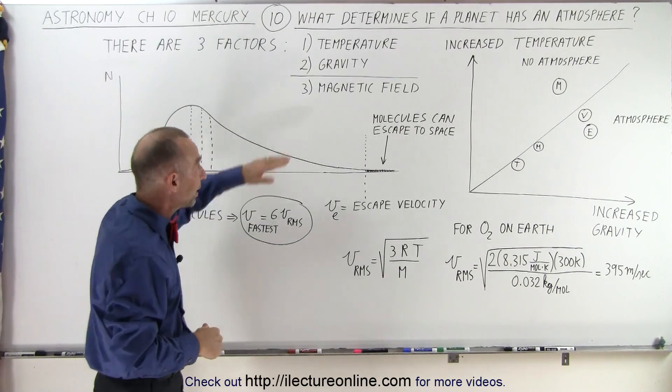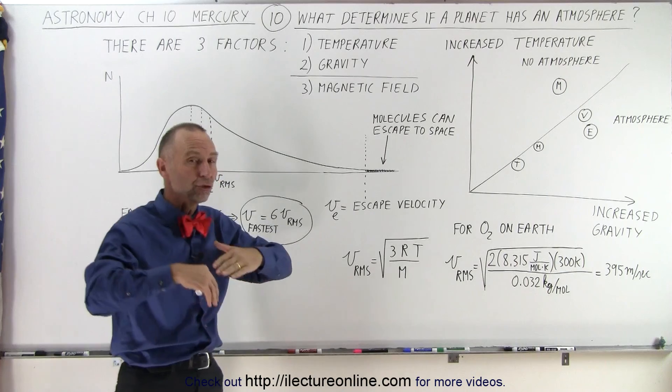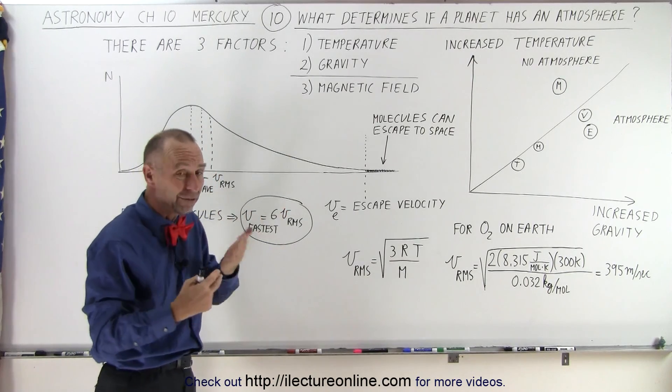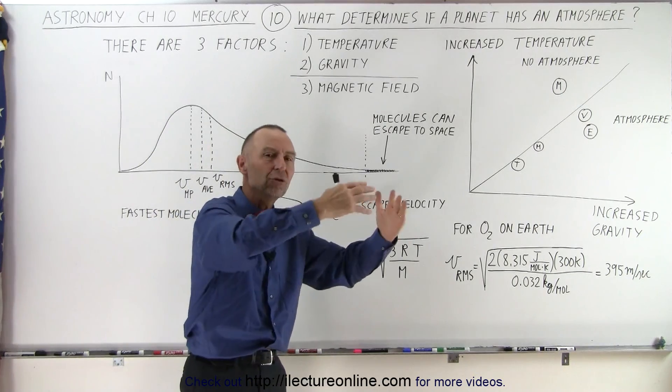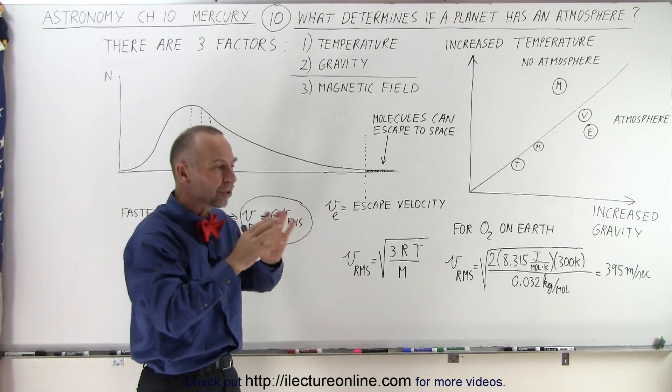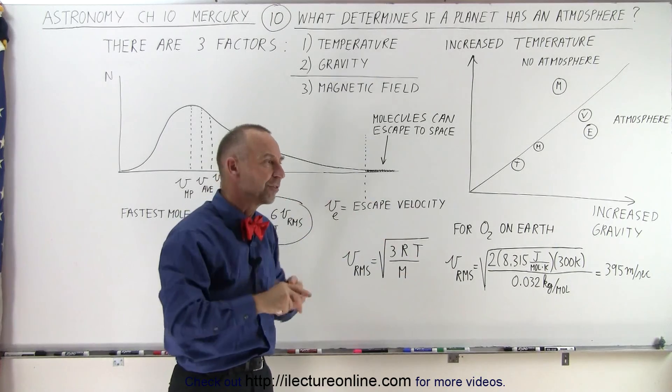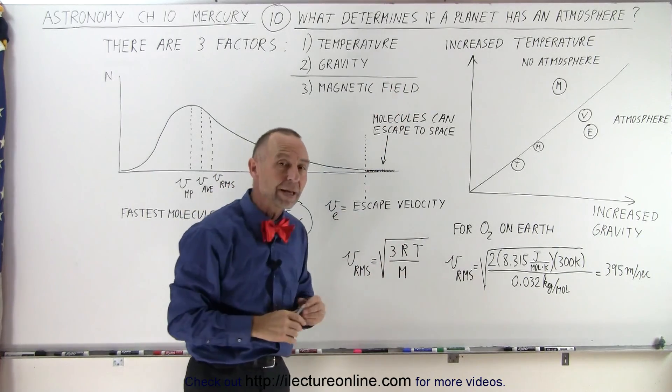Now, the third factor, of course, is the magnetic field, and if there's no magnetic field, and Mercury's magnetic field is fairly weak, then the solar wind can impact into the planet, and the solar wind particles can actually rip portions of the atmosphere away and send it off into space,